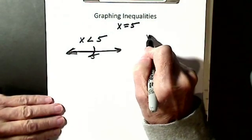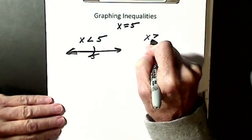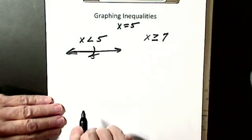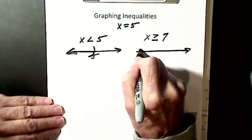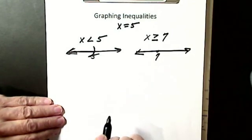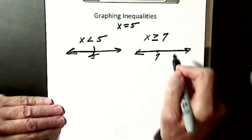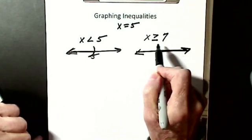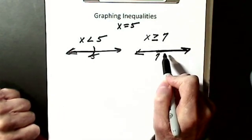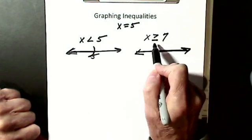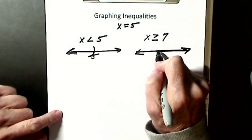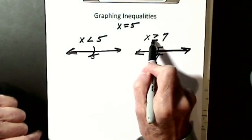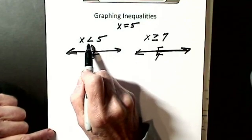Let's say I have x is greater than or equal to 7. This little line means or equal to. I draw my number line, here is my 7, and all the numbers greater than 7 go this way. This includes 7, so I have to have a bracket. If it has the or-equal line, it's a bracket; if it doesn't, it's a parenthesis.